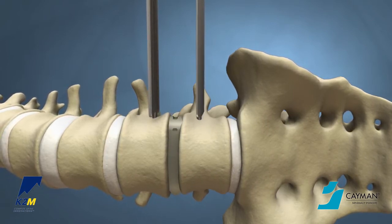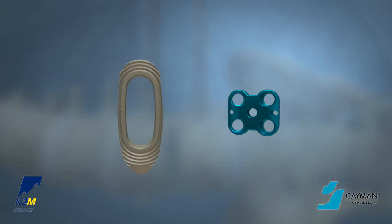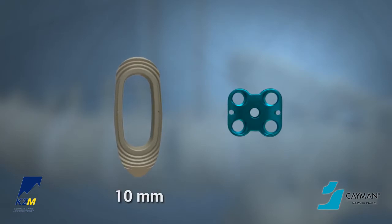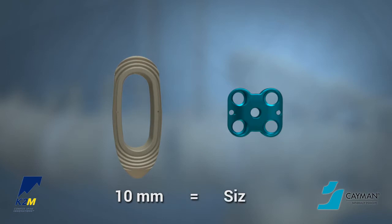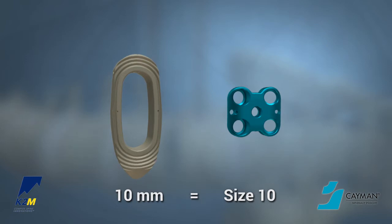This will ensure a flush seating of the plate to the vertebral body. The Cayman MI plate sizes correspond with the elution lateral interbodies. For example, when inserting a 10 mm height elution lateral interbody, a size 10 Cayman MI plate may be used. If a larger plate is preferred, a larger size such as a size 12 or 14 can be used.